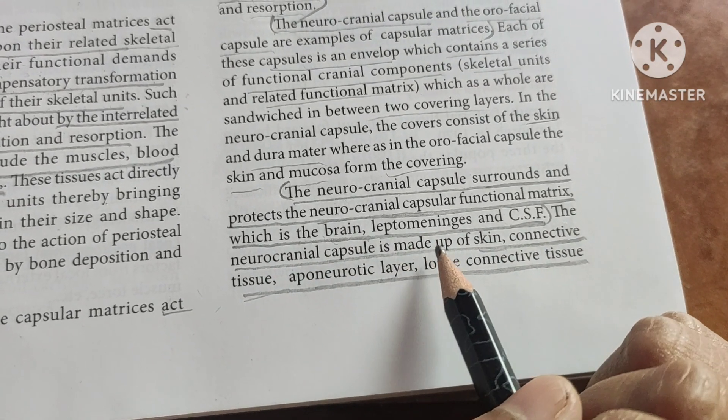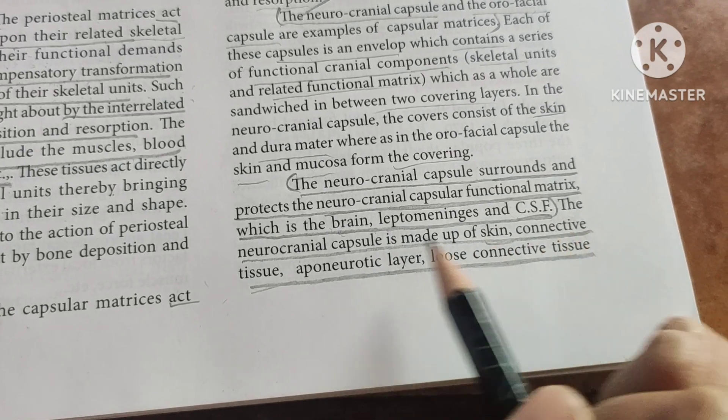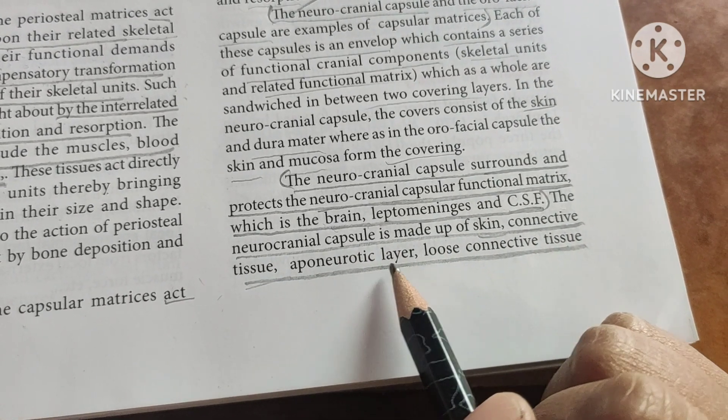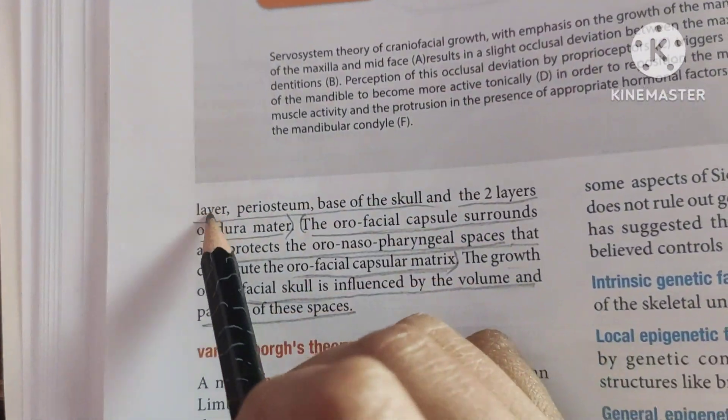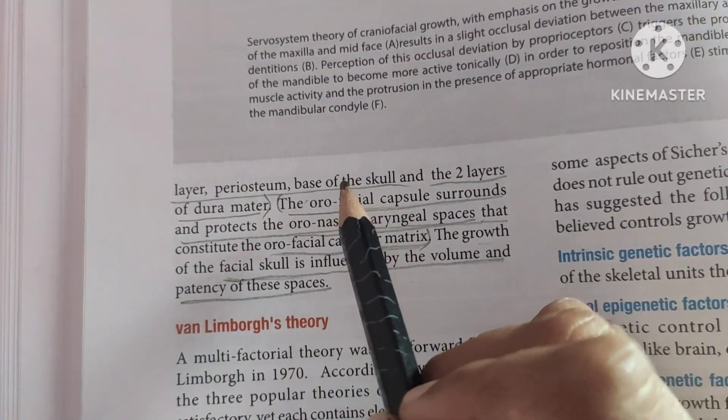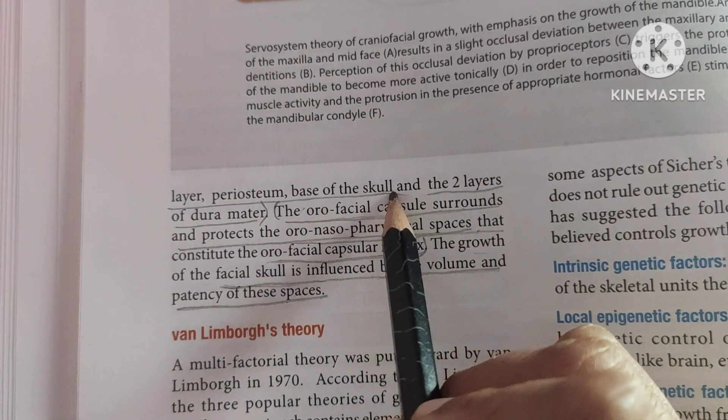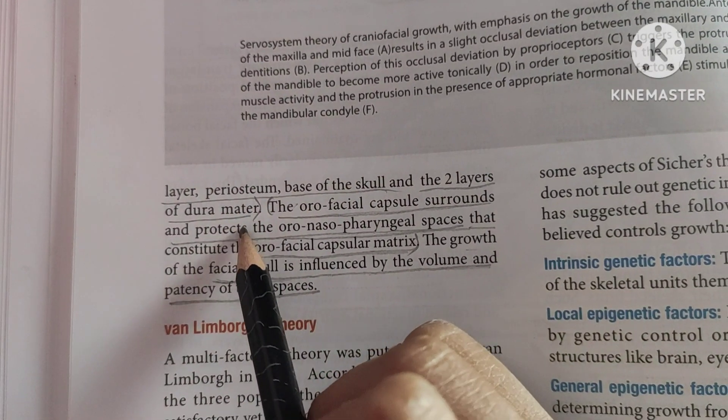The neurocranial capsule is made up of skin, connective tissue, aponeurotic layer, loose connective tissue layer, and the periosteum, along with the base of the skull and two layers of the dura mater.